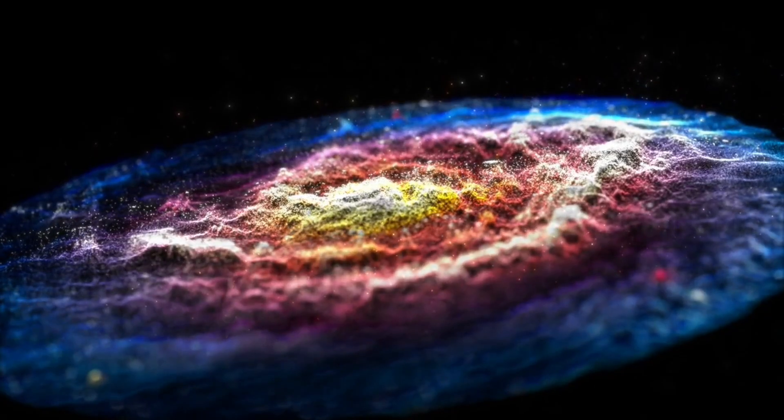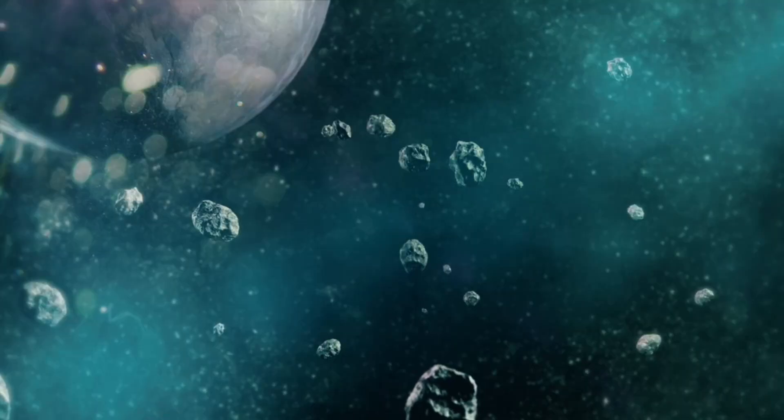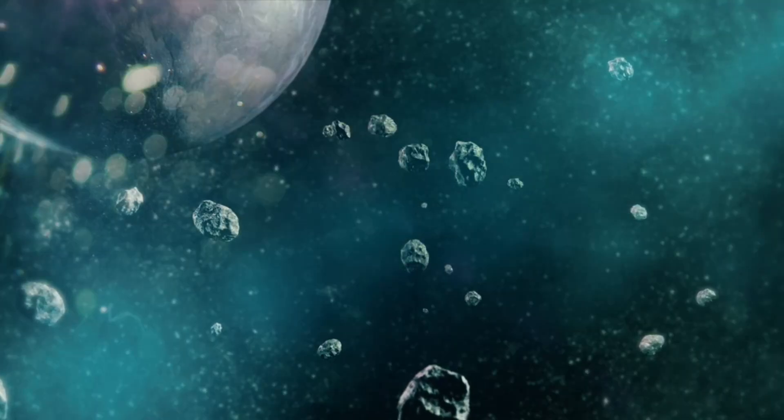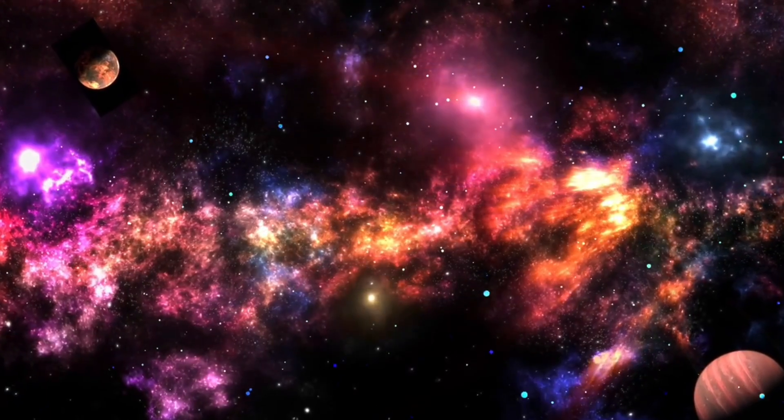This is where the story takes its most suspenseful turn. Jupiter is known as both protector and destroyer. It has flung countless comets into safe orbits and countless others into oblivion. When a comet comes this close, three things can happen.